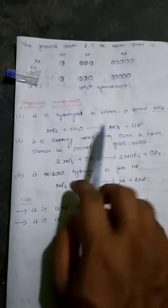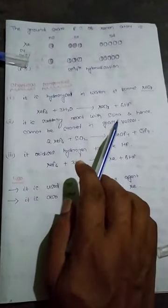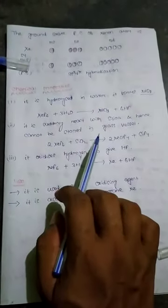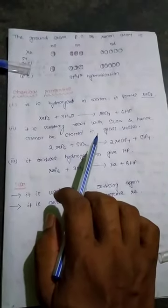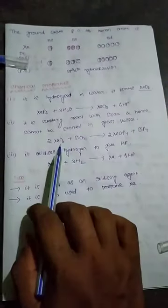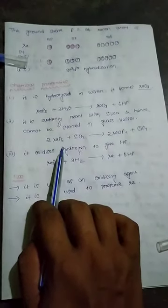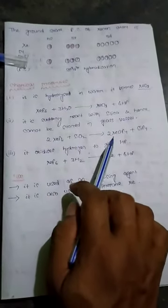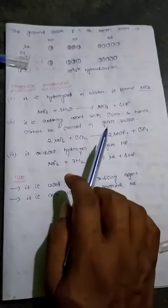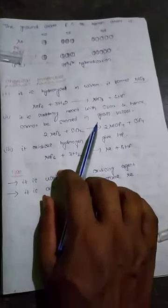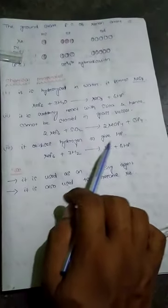XeO3 suddenly reacts with silica and therefore cannot be stored in glass vessels. This reaction with glass vessel: XeF6 plus SiO2 gives 2XeOF4 plus SiF4.